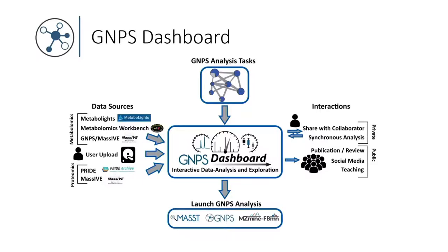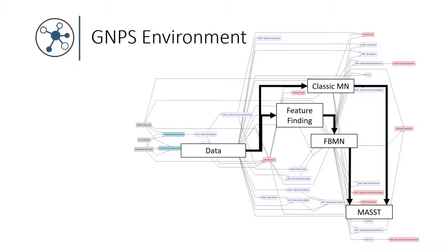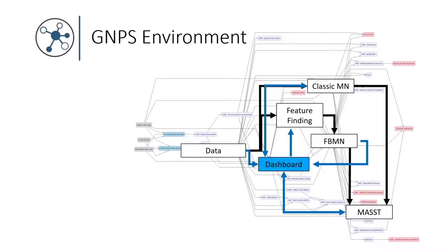From the dashboard we can interact with the community through both static and interactive means, and also launch analysis from there — so it's not only a viewer but also a portal for additional data analysis. For those not fully familiar with the GNPS environment: it started with molecular networking but has evolved into a very full environment with a ton of different tools. What we use most in the lab is classic molecular networking, feature-based molecular networking, and repository-scale analysis such as MAST. The dashboard sits in the middle, letting us launch all these analyses directly and then go back for visualization.